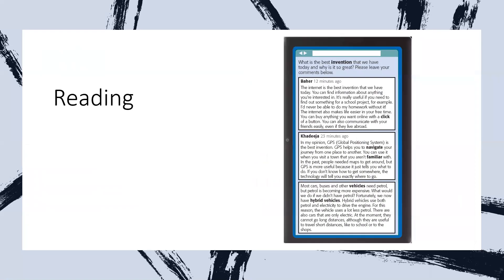And then the next part is the reading part. The reading is about inventions or technology in the house. Here we have three text parts. The first one is Baher, and then the second one is Khadija. Baher speaks about the internet and says that the internet is the best invention because it made things easier for people. And then Khadija speaks about the GPS and about vehicles, especially hybrid vehicles.